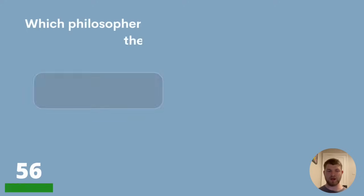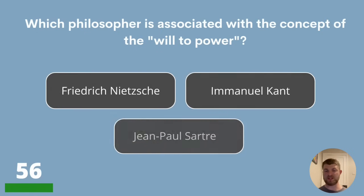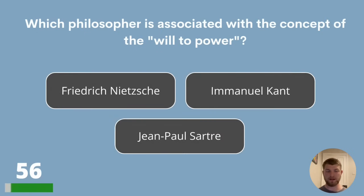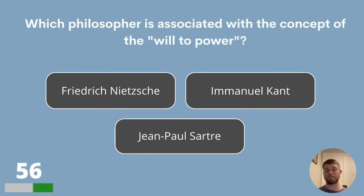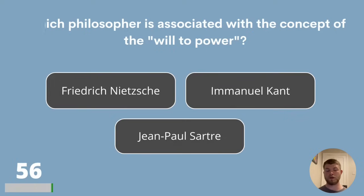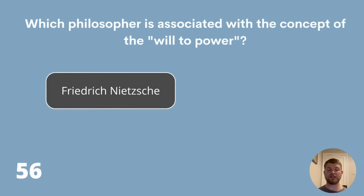Question 56. Which philosopher is associated with the concept of the will to power? Friedrich Nietzsche, Immanuel Kant or Jean-Paul Sartre? The answer is Friedrich Nietzsche.